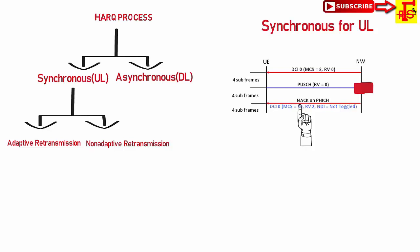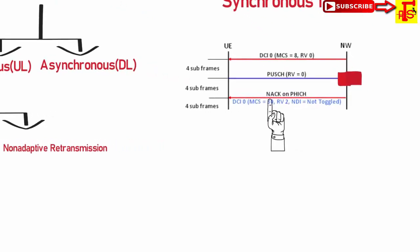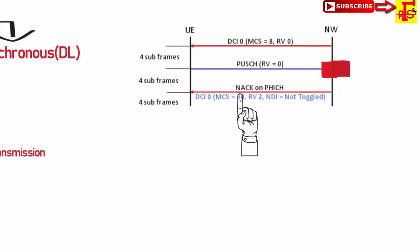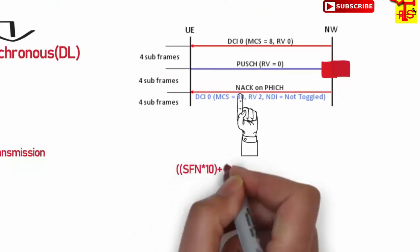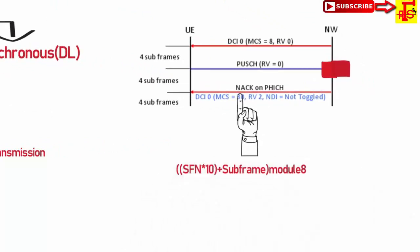Every 8 subframes, eNodeB knows when the HARQ process will be triggered. The HARQ process ID is created by this formula: SFN × 10 + subframe, modulo 8. From this formula, we calculate the HARQ process ID. This forms a cycle.